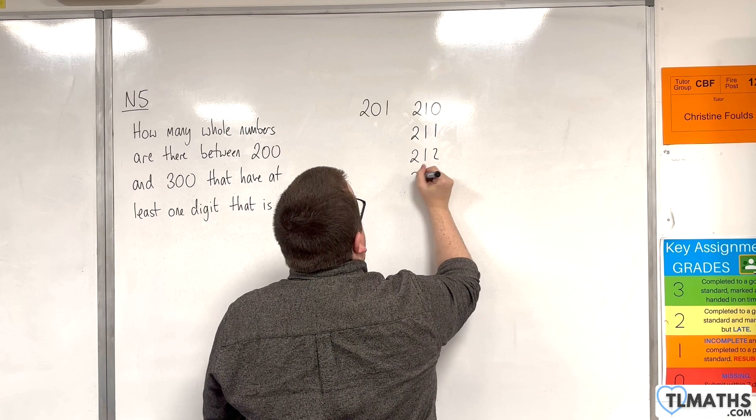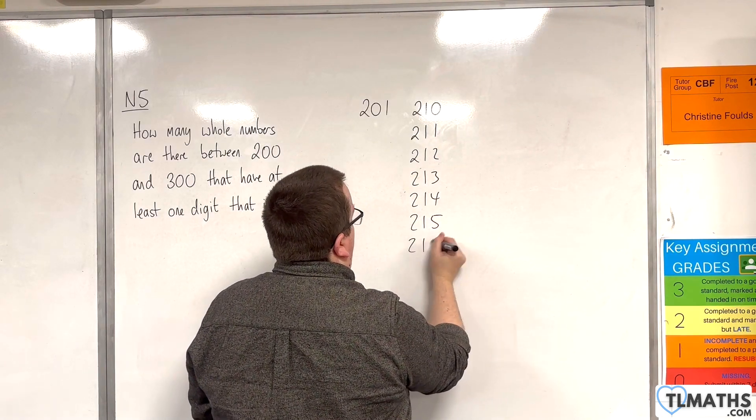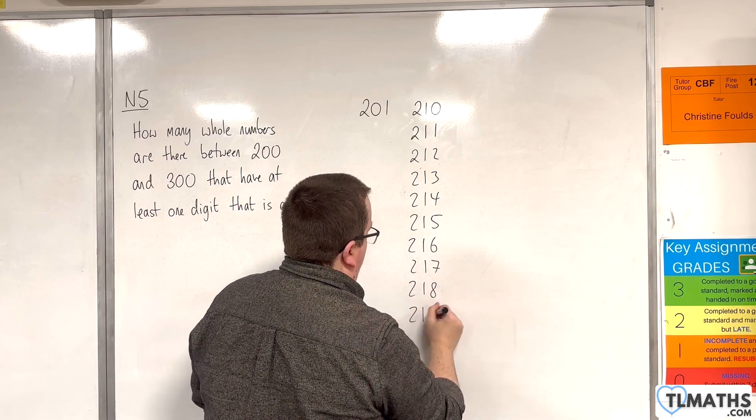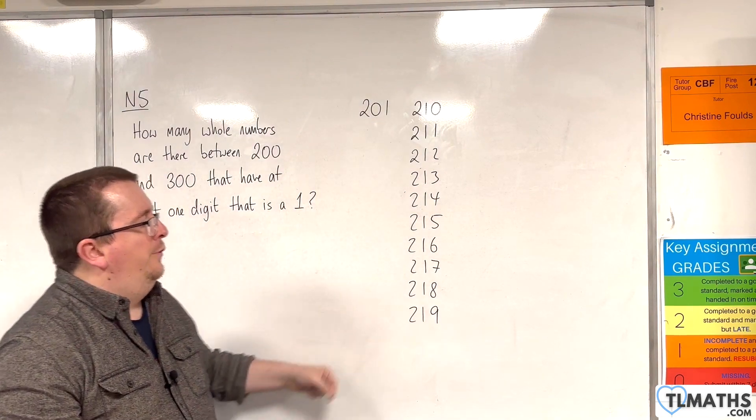Then 212, 213, 214, 215, 216, 217, 218, 219. So we can go through all of those.